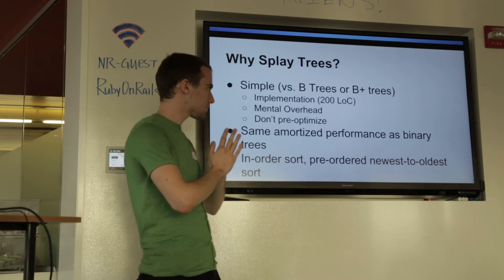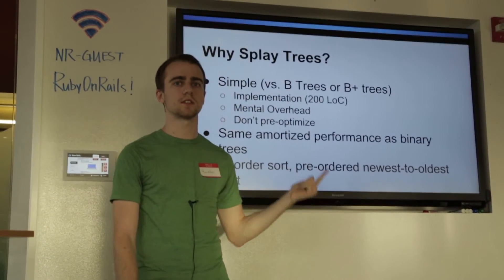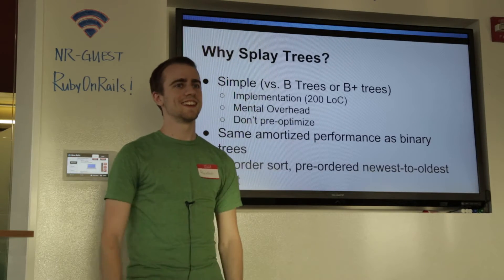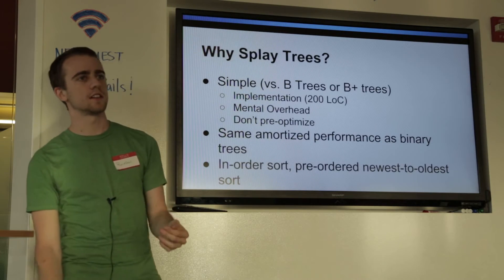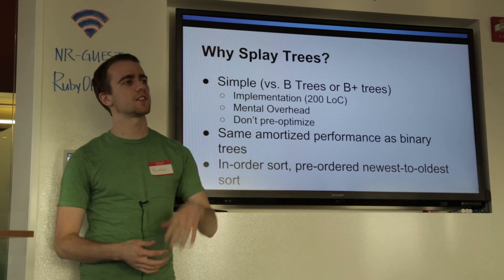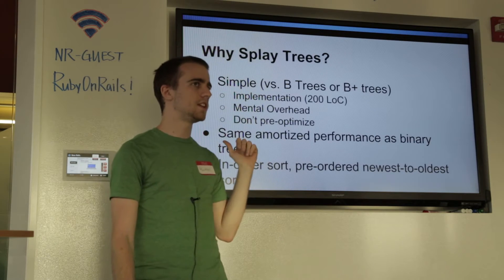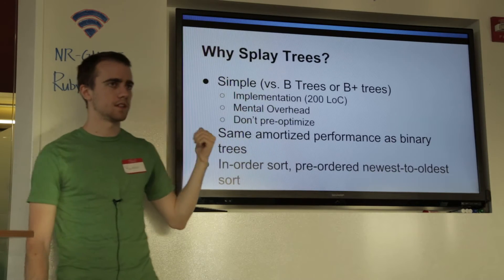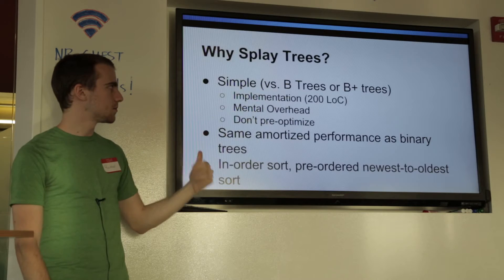So why splay trees? They're pretty simple. They're basically binary trees and you don't have any of the kooky overhead that you have with B-trees, B-plus trees, or red-black trees. Our implementation, which I scraped straight off Wikipedia and ported to C, is about 200 lines with some extra stuff. The mental overhead is a lot smaller — you're not thinking about how many nodes are in a leaf node. It's just a binary tree: you have a node, things less than it, things greater than it. And we just didn't need any greater data structure than this. It's very important that you pick the data structure for your need.